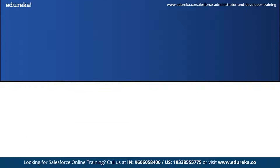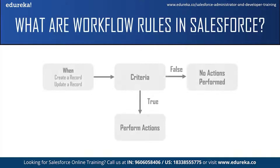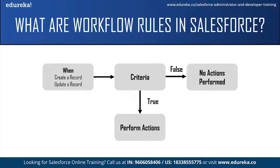Criteria is basically the condition that causes the workflow rule to run. Only if the condition is true are the actions automatically performed. If the condition is false, then the workflow rule does not apply. Actions are automatic tasks which are performed after the criteria has been met, or when the condition is true.